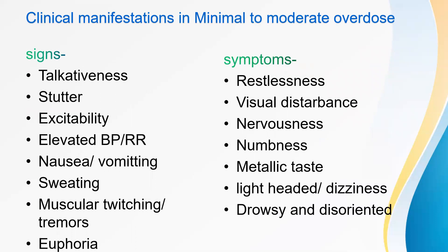Clinical manifestations in minimal to moderate overdose — signs include talkativeness, stutter, excitability, elevated BP and respiratory rate, nausea, vomiting, sweating, muscular twitching or tremors, and euphoria. Symptoms include restlessness, visual disturbance, nervousness, numbness, metallic taste, light-headedness or dizziness, drowsiness, and disorientation. In moderate to high overdose, there is generalized tonic-clonic seizure activity followed by generalized CNS depression, depressed BP or heart rate, and depressed respiratory rate.